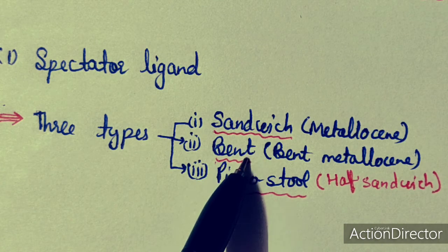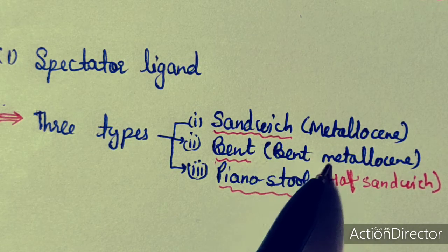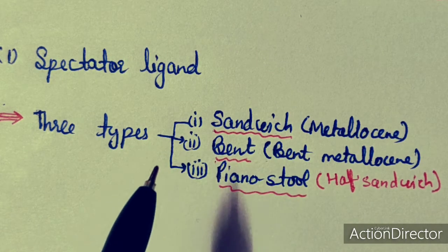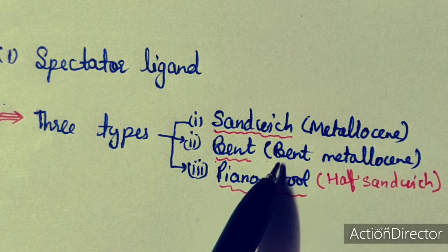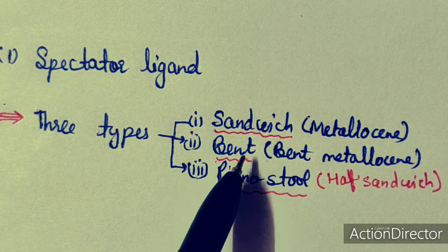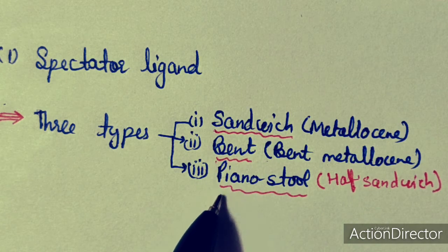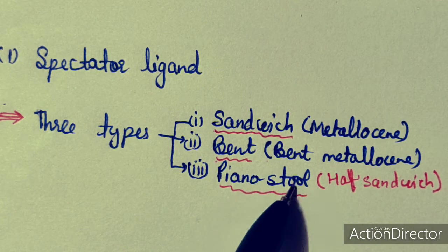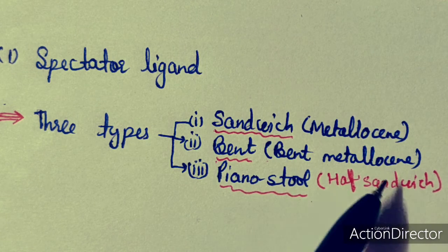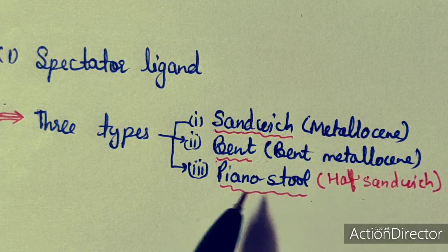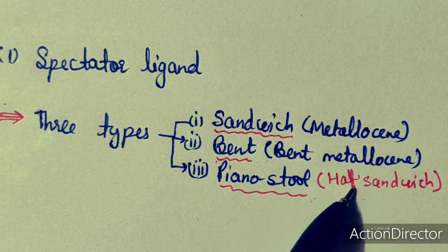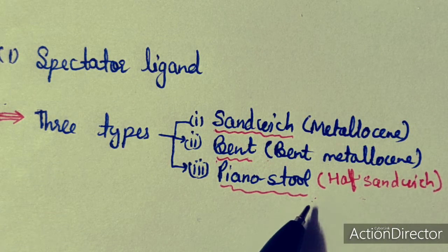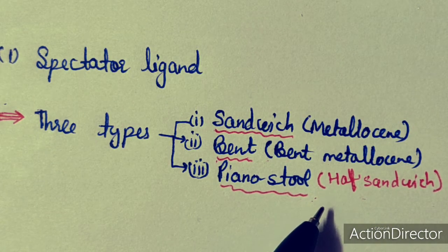The second type is bent metallocene. In this case there are also two cyclopentadienyl rings, but they are not in a sandwich arrangement — the two rings are bent. The third type is piano stool or half sandwich. Its structure resembles a piano stool, and it is called half sandwich because there is only one cyclopentadienyl ring.